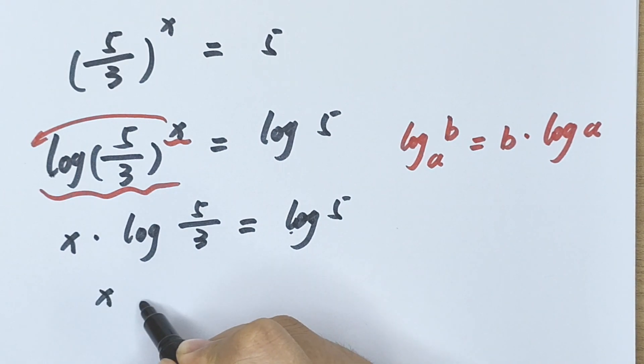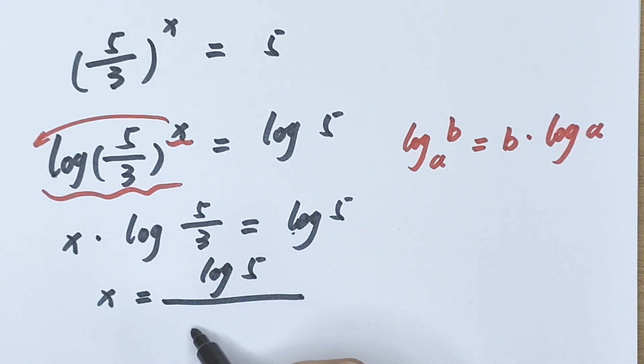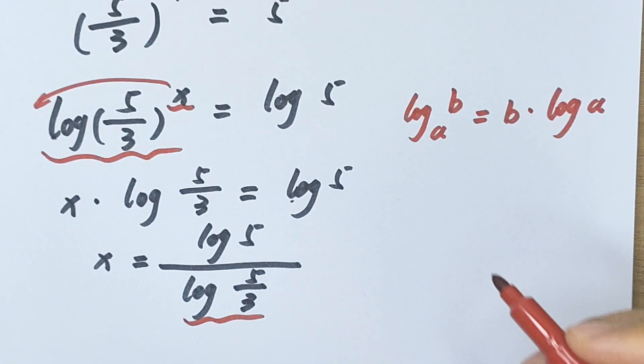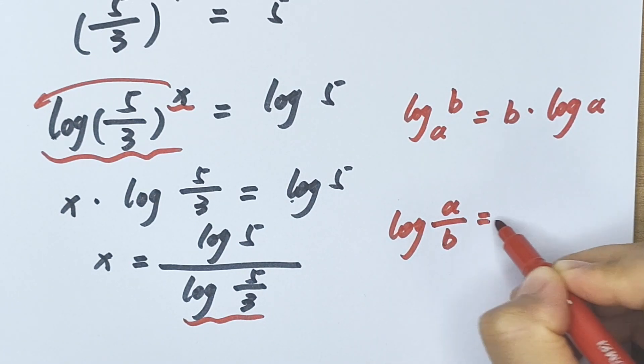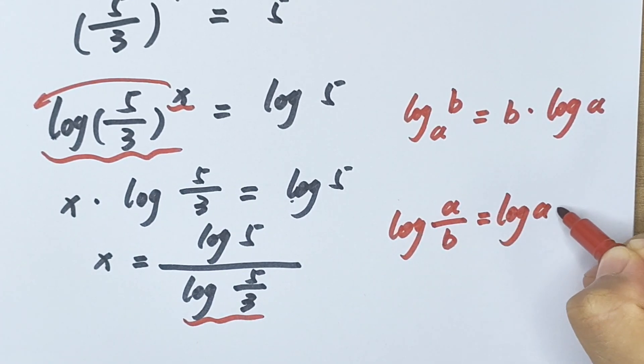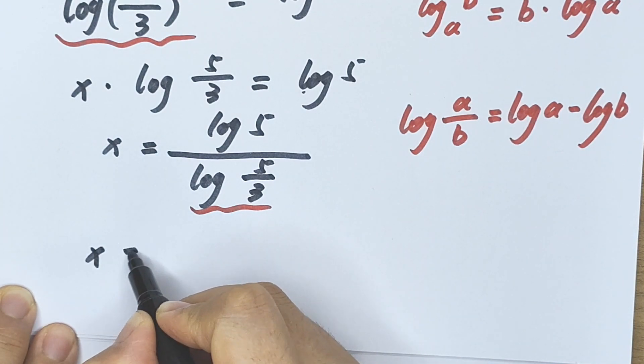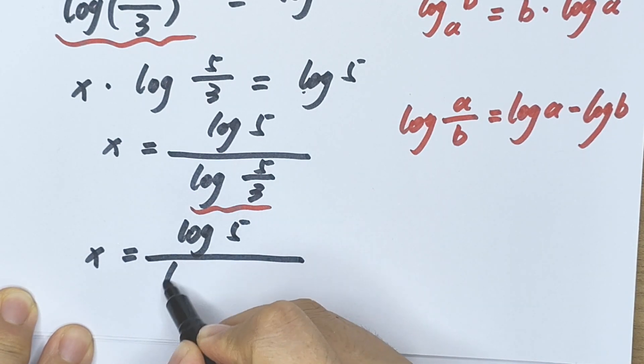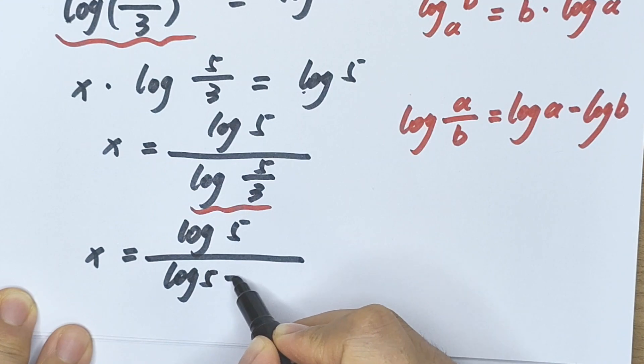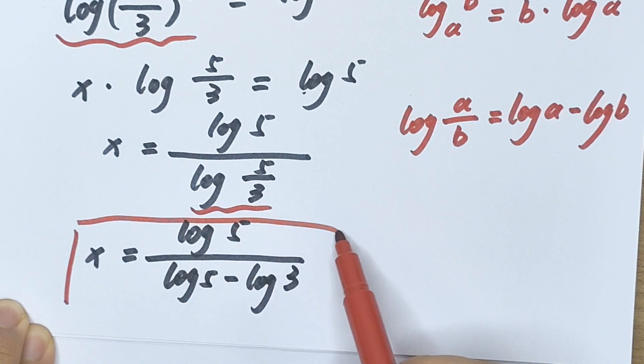So x times log 5 divided by 3 equals log 5. So x equals log 5 divided by log of 5 over 3. So x equals log 5 divided by log 5 minus log 3. So this is the final answer.